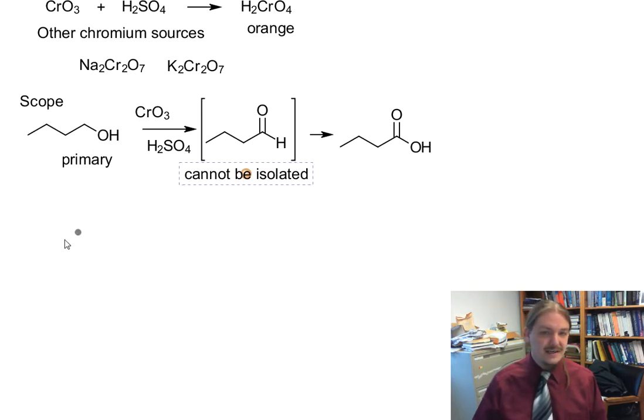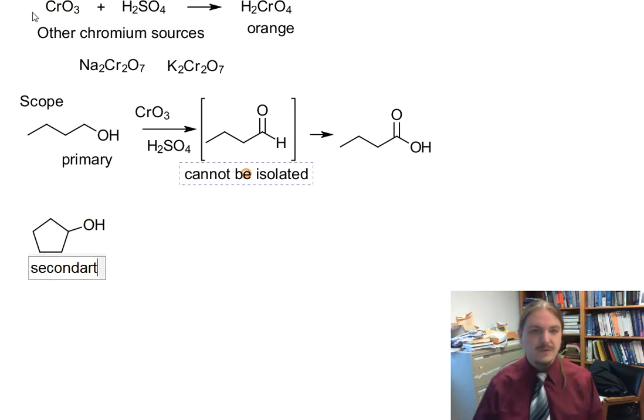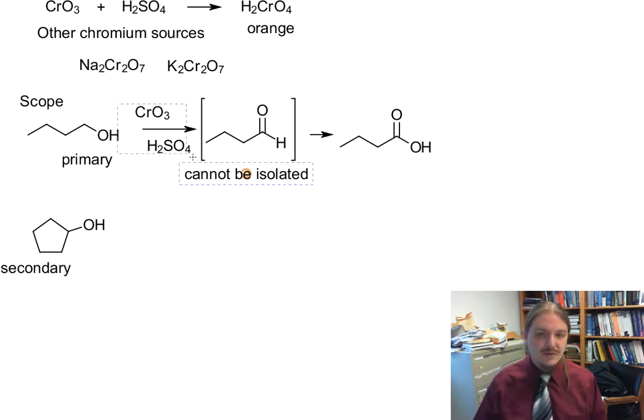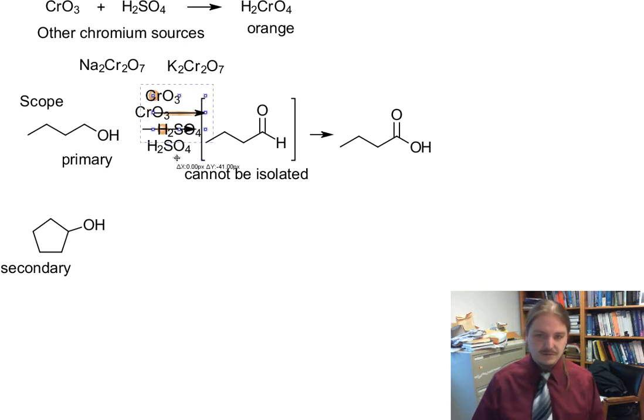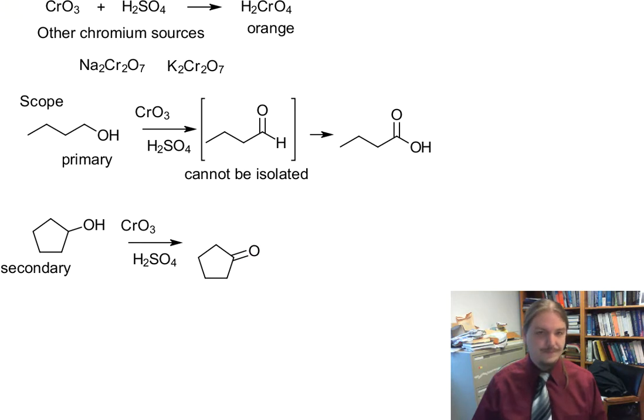If we have a secondary alcohol, let's do cyclopentanol. Cyclopentanol will react with chromic acid type conditions to make a ketone. And ketones are generally a little bit harder to oxidize further. So once this has occurred, it's done.